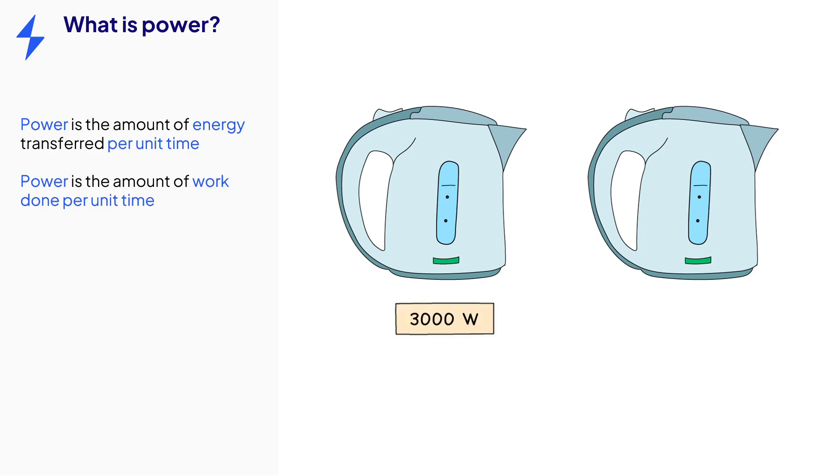So this kettle can boil three cups of water faster than this one because its power rating is higher. The amount of energy it transfers electrically per second is greater.